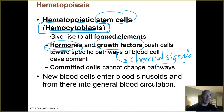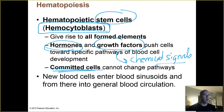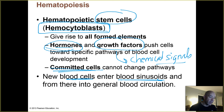Once blood cells start heading down some sort of pathway, they become committed at some point. It's not like a hemocytoblast suddenly becomes a red blood cell, or a neutrophil, or a lymphocyte — it takes multiple steps. But at some point along those pathways, they become committed cells that cannot change pathways. They're going to become a neutrophil or a lymphocyte and can't change into a platelet or red blood cell. Once these blood cells are formed, they enter those blood sinusoids and then flow into your blood vessels, entering general circulation.